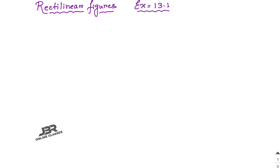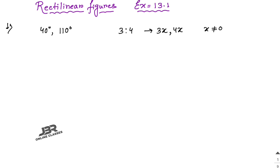Sum number 1: If two angles of a quadrilateral are 40 degrees and 110 degrees, and the other two are in the ratio 3:4. So the first given angle is 40°, second is 110°, and the other two can be written as 3x and 4x, where x is a non-zero constant. In a quadrilateral, the sum of four angles equals 360°. So: 40 + 110 + 3x + 4x = 360.